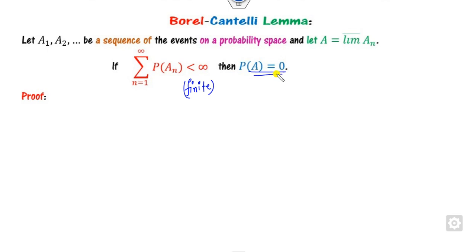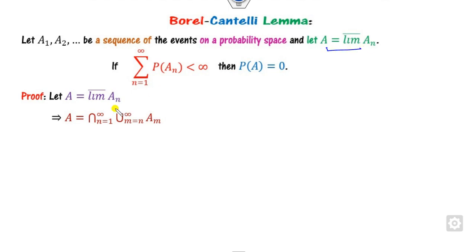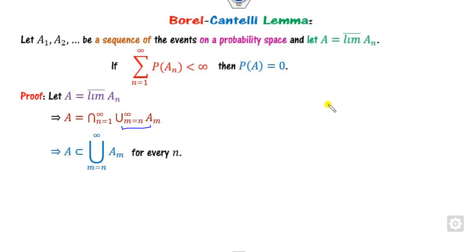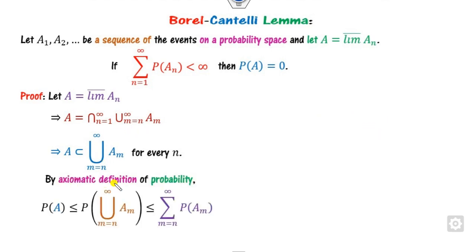The proof is simple. By the definition of the limit supremum, A is a subset of the union from k=n to infinity of A_k. Since A is a subset of B, by the definition of probability we can write P(A) ≤ P(union). The probability of the union is bounded by the sum of their probabilities.